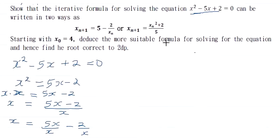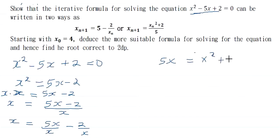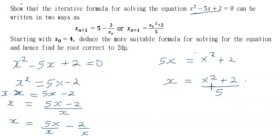For the second formula, we make x the subject differently. Taking 5x to the other side: 5x = x² + 2. Dividing both sides by 5 gives x = (x² + 2)/5. Discretizing, the second iterative formula is: xₙ₊₁ = (xₙ² + 2)/5, where n = 0, 1, 2, 3, ...